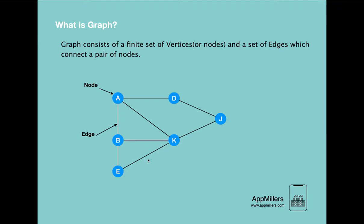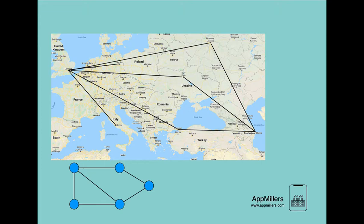Now let's see why we need graph data structure. Graphs are used to solve many real life problems. Graphs are used to represent networks. The networks may include paths in a city or telephone network or circuit network. Graphs are also used in social networks like LinkedIn, Facebook.